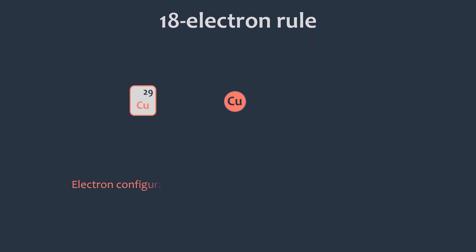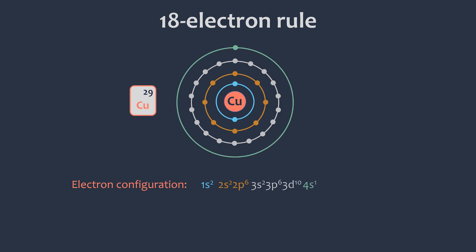Now, let's talk about the 18 electron rule and where it comes from. Take copper as an example for a transition metal. The electron configuration of copper is 1s2, 2s2, 2p6, 3s2, 3p6, 3d10, and 4s1.